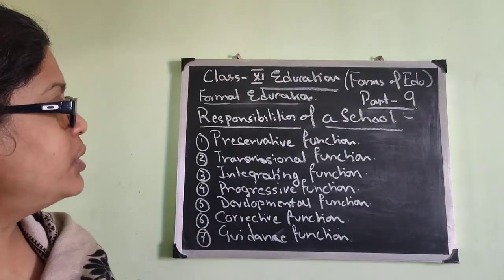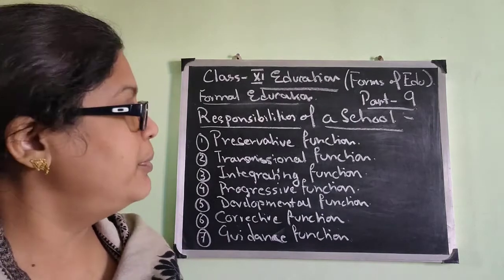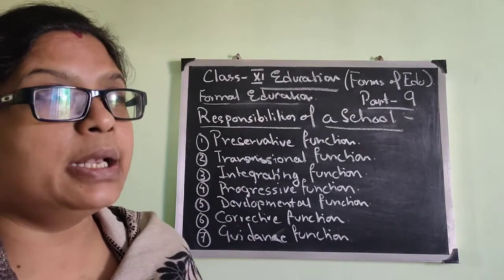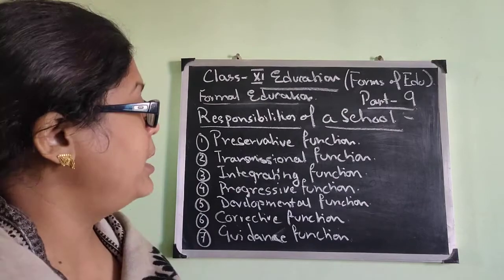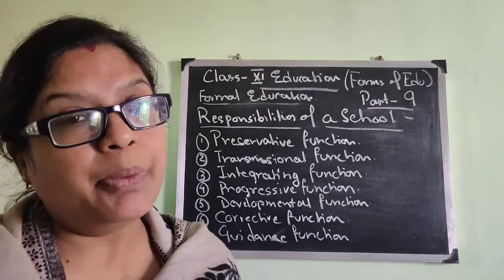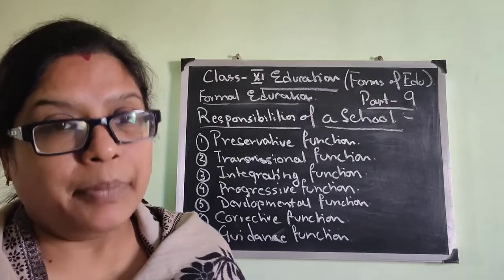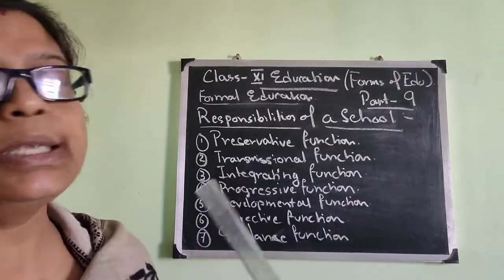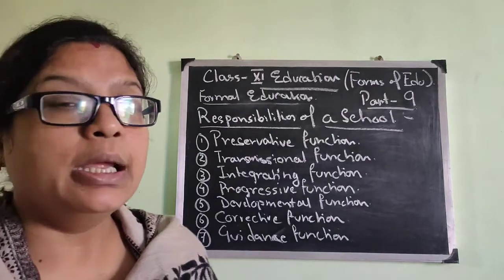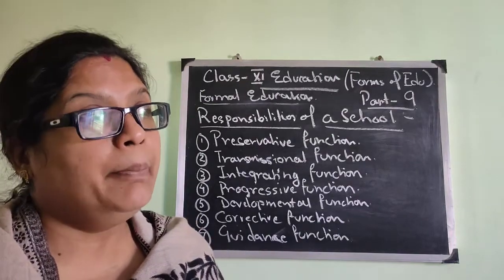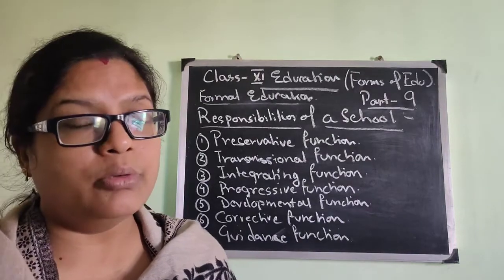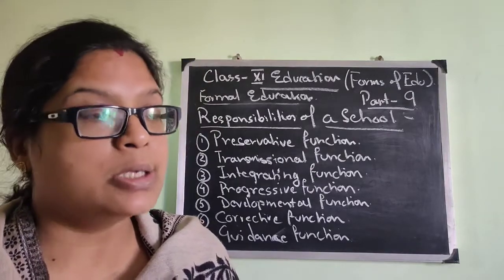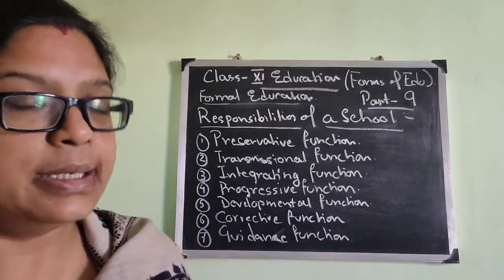All these points you are going to get in your book and I think you have understood. When we have a live class, we will mark it, and I think it will help you more if you get the PDF along with the video. Next day we are going to discuss what are the limitations of the school — being an institute of formal education, there are some limitations of a school as well. That we will discuss in the next class. Thank you.